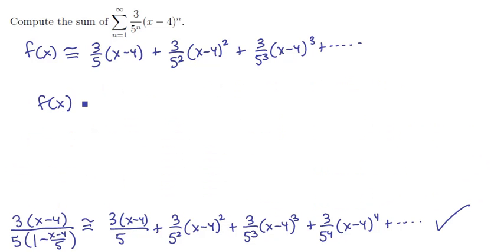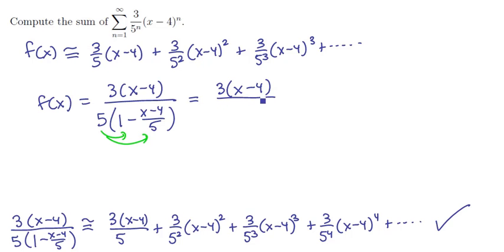Let's at least clean up that function on the left-hand side to make it more legible. Our f(x) is equal to 3 times (x minus 4) up top. On the bottom we have 5 times (1 minus the quantity (x minus 4) over 5). If we distribute that 5 in, we could get rid of these fractions here. And so we would have 3 times (x minus 4) on the top still, and on the bottom we would have 5 minus the quantity (x minus 4).